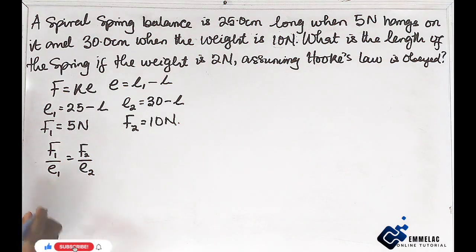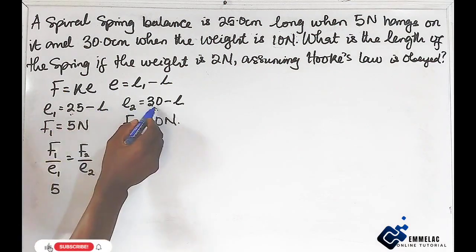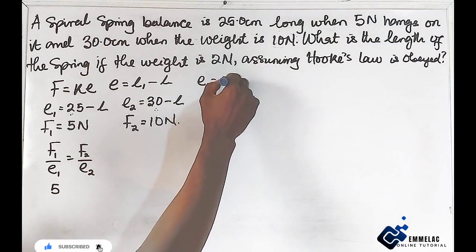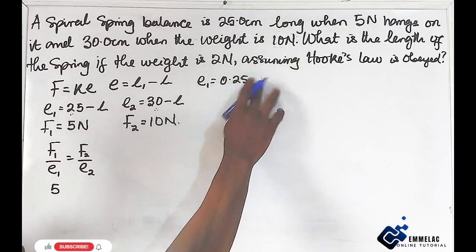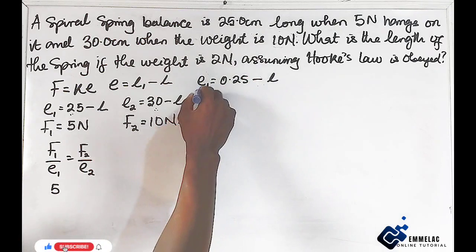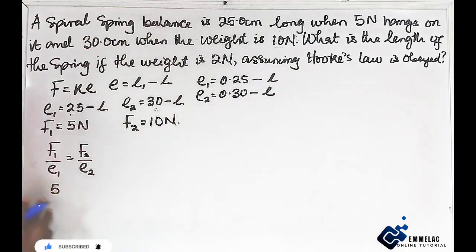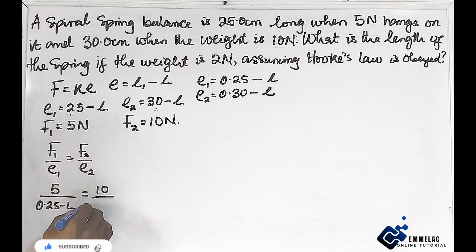So for F1 we have 5 Newton. First, let us convert units: 25 centimeters becomes 0.25 meters and 30 centimeters becomes 0.30 meters. So E1 becomes 0.25 minus L, and E2 will be 0.30 minus L. Plugging in: 5 over (0.25 minus L) equals 10 over (0.30 minus L).